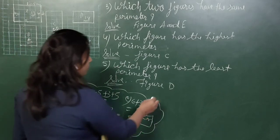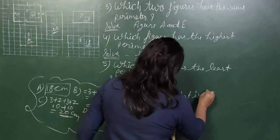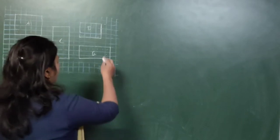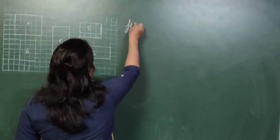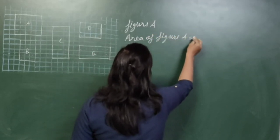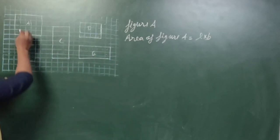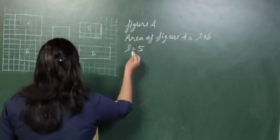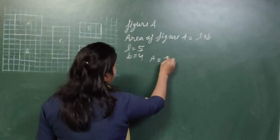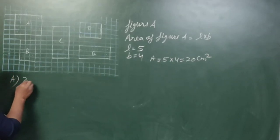Question number 6 asks for the area. What is the area of figure E? We first find the area of all figures. For figure A, the formula is length into breadth. Counting: length is 5, breadth is 4. Area equals 5 × 4 = 20 centimetres square. Figure A has an area of 20 centimetres square.